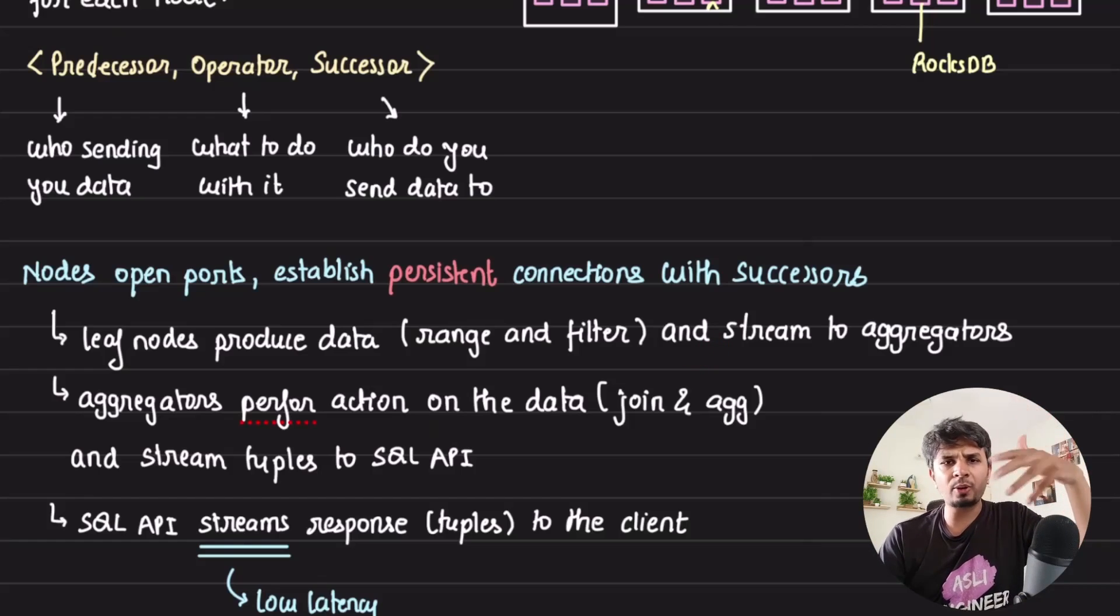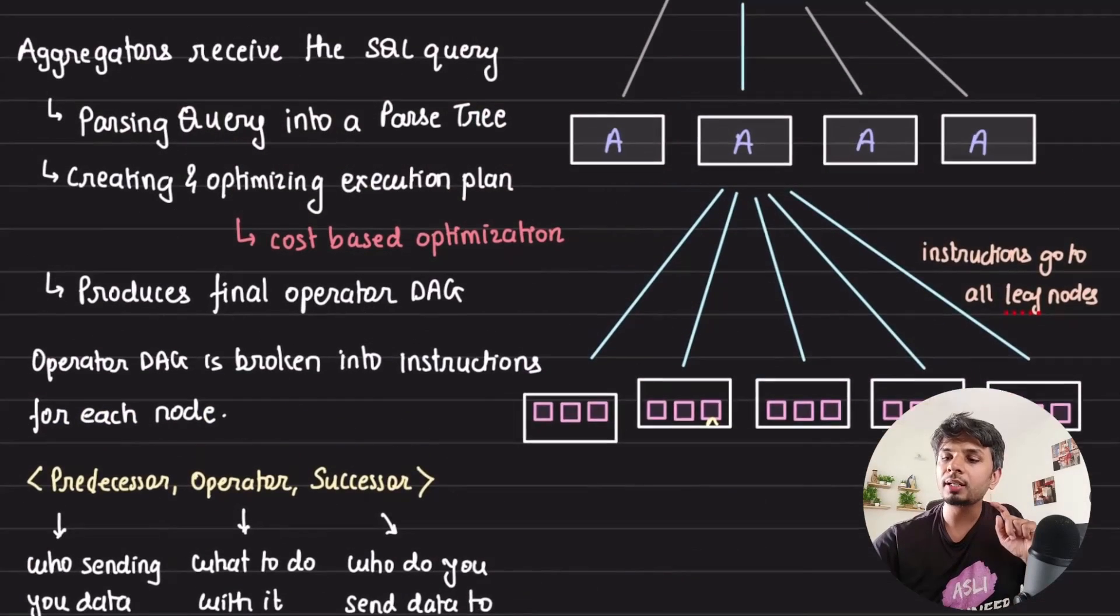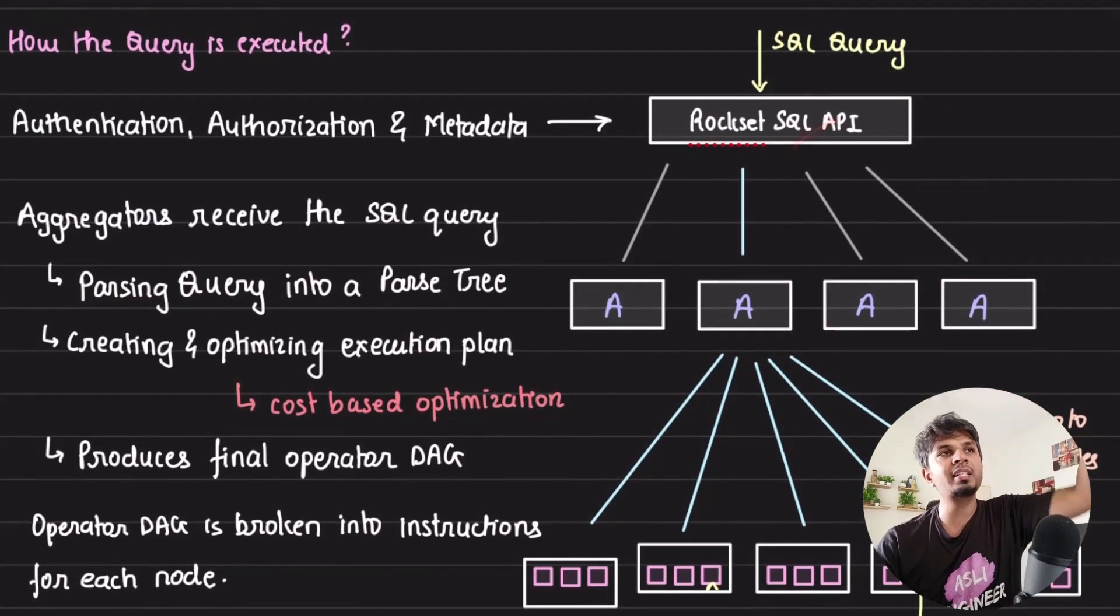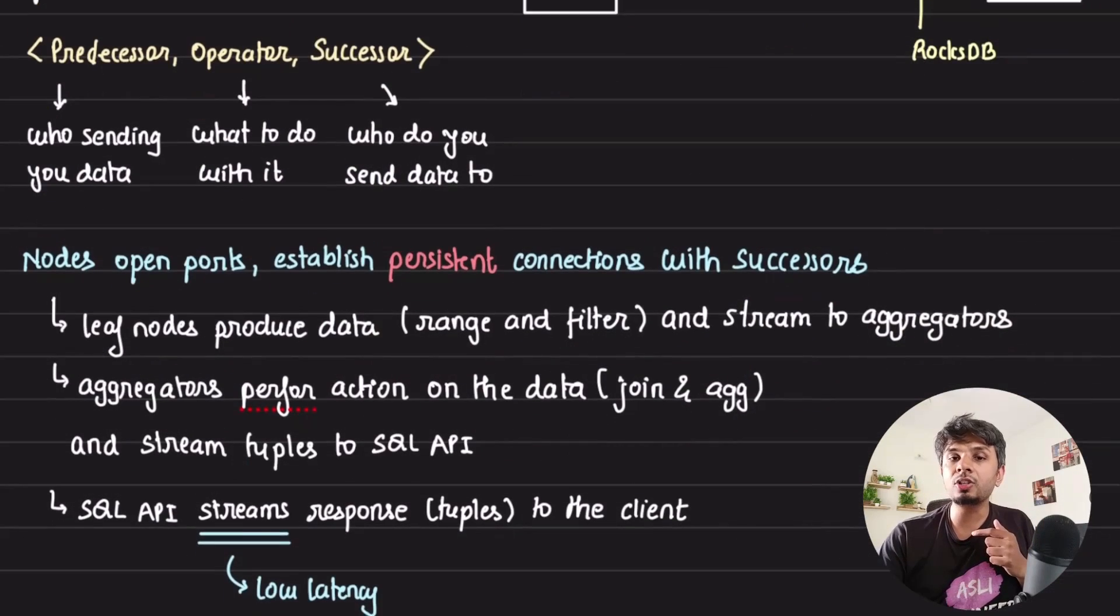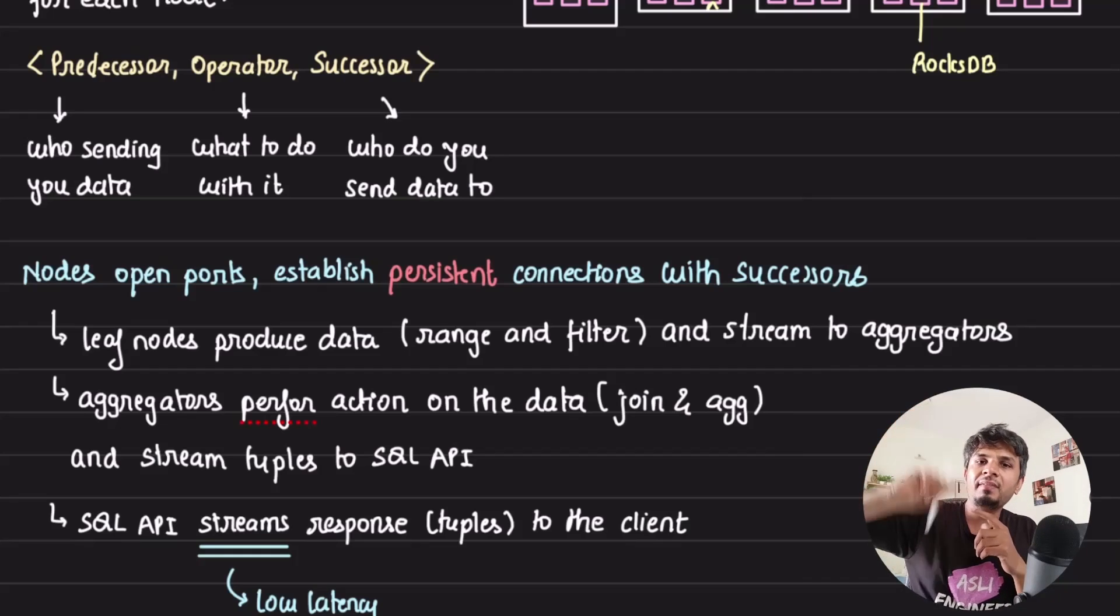The aggregator will perform the action that it is supposed to - which is join, aggregation, whatever it needs to do - and it streams tuples to the Rockset SQL API which can send the data to the client. This way your client does not need to wait for the entire data to be computed before it gets it - it gets the data as and when it is ready.